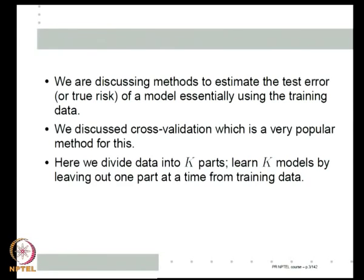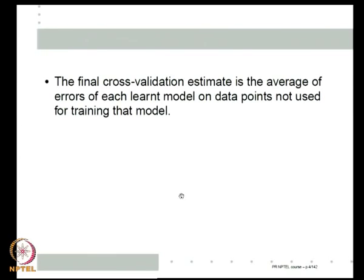First time we use parts 2, 3, 4 all the way up to k for training, and then test this classifier — find the classifier's error on part 1. Next time we use parts 1, 3, 5 and so on, and then test that classifier on the left-out part. Essentially, we divide the data into k parts then learn k models, each time leaving out one part from the training data, which is used for testing.